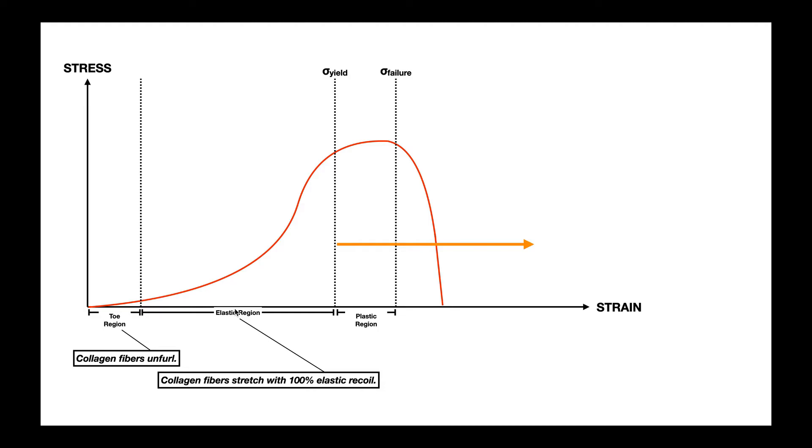So the elastic region, this is where collagen fibers stretch with 100% elastic recoil. And for a lot of structures, this is a pretty wide region of the curve. Now, what does it mean to be elastic? Well, think about the rubber band. When I stretch that rubber band, I take it from its base length and I stretch it, that's the property of extensibility.